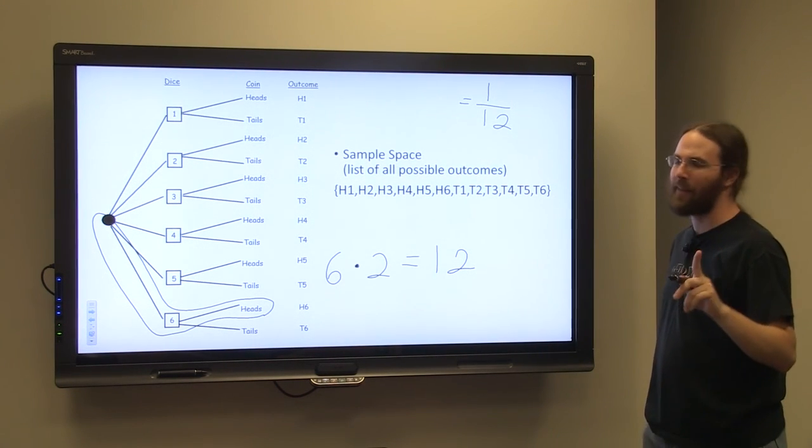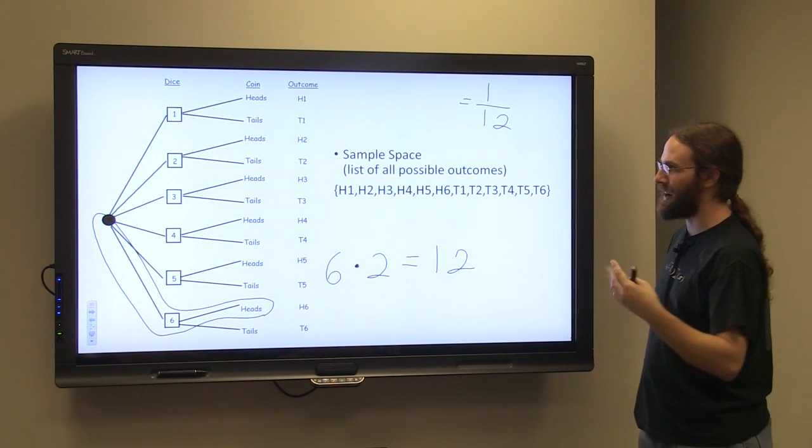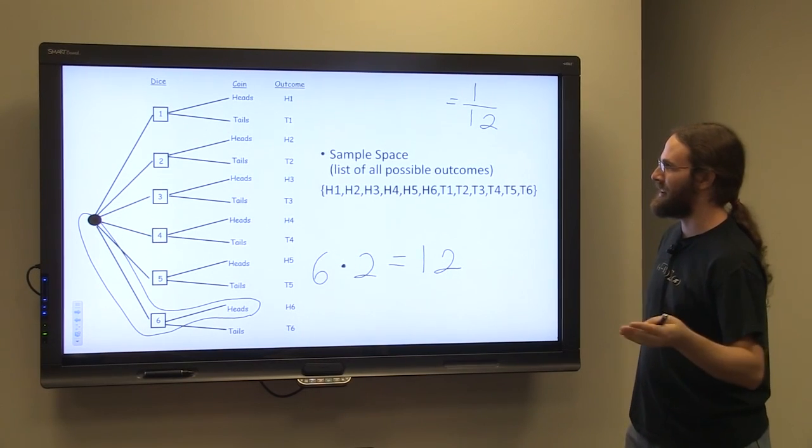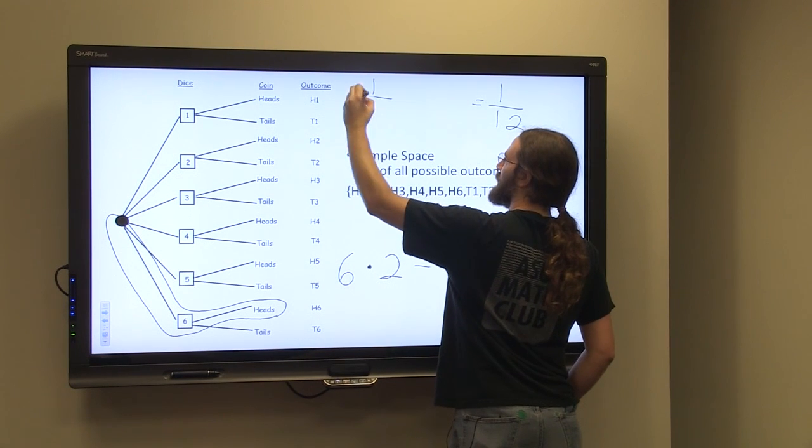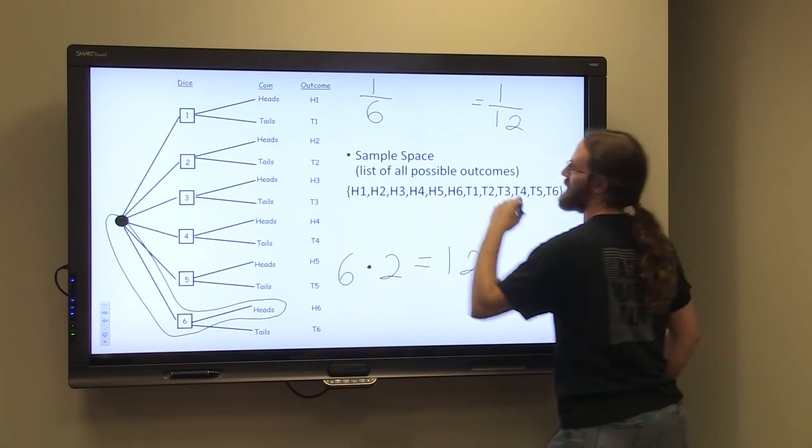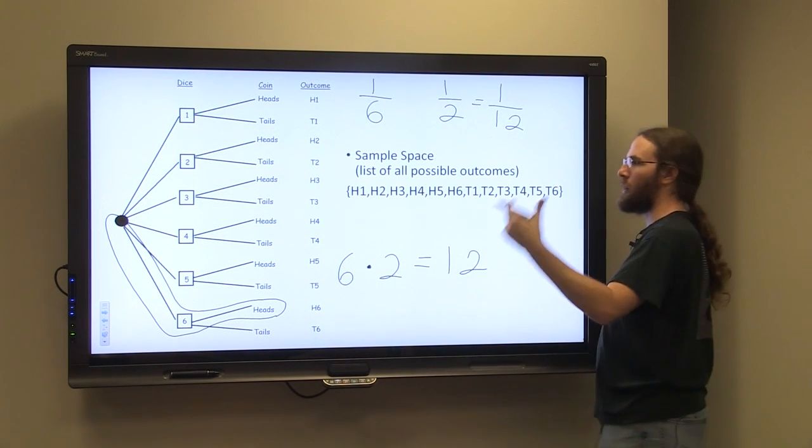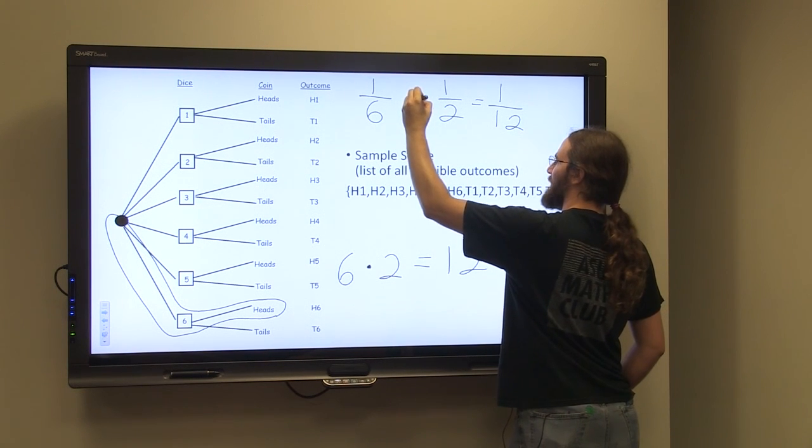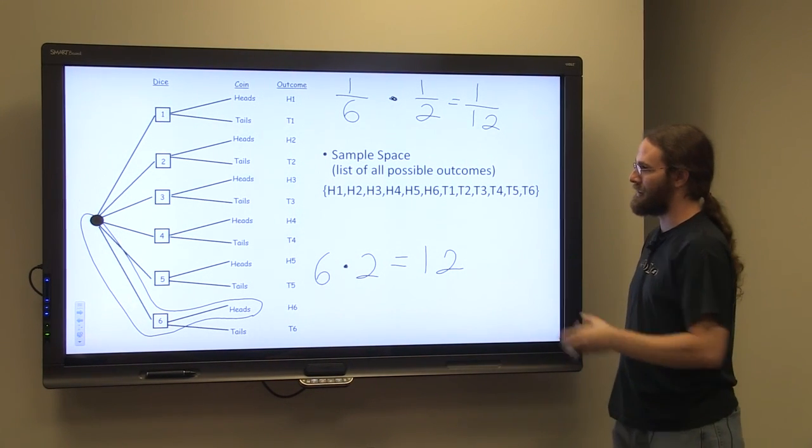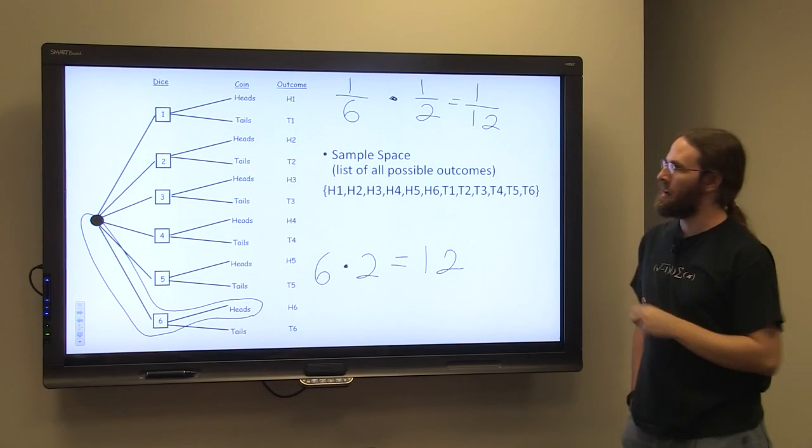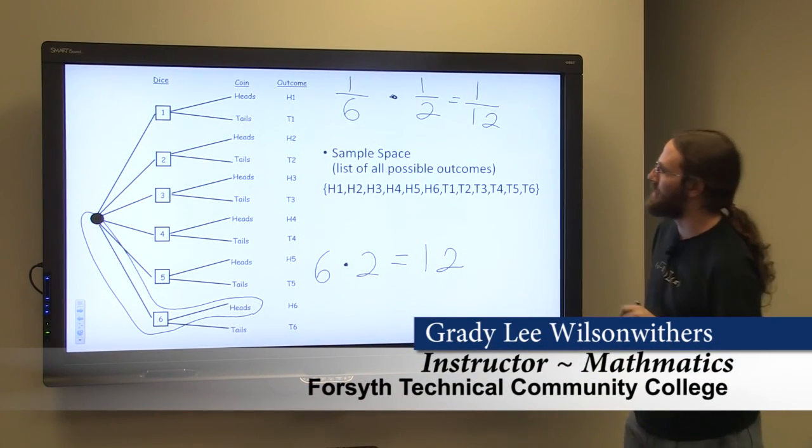While we're here, let's think about this yet another way. These are independent events. The coin does not care how the die performed, and vice versa. The probability of rolling a six would be one out of six. The probability of flipping a head would be one out of two. So another way we could have approached this would have been the probability of the first event times the probability of the second event gives us the probability of the two events together. And this is an example of independence.